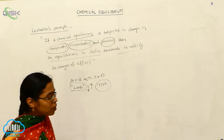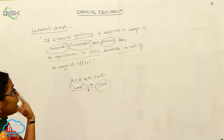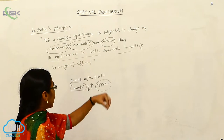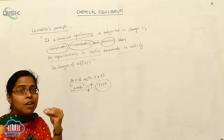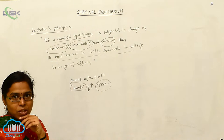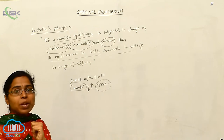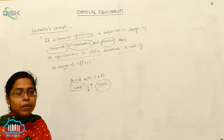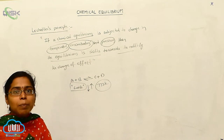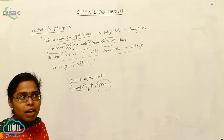What is the definition of Le Chatelier's principle? If a chemical equilibrium is subjected to a change in temperature, concentration, and pressure, then the equilibrium of that reaction is always shifted to nullify the change of the effect. Whenever we are increasing the temperature, equilibrium shifts towards decreasing of temperature. Whenever we are increasing the pressure, the equilibrium shifts towards the decreasing side of pressure. As for concentration — whenever concentration increases, the shifting of the equilibrium is also towards the decreasing side of concentration, to reach the normal position before the change.